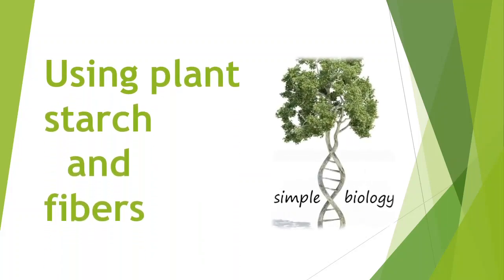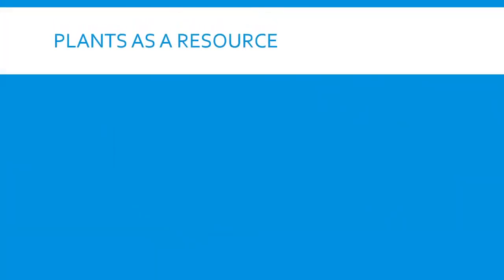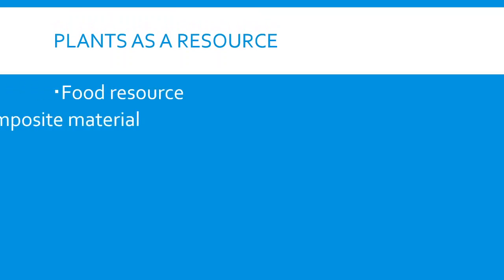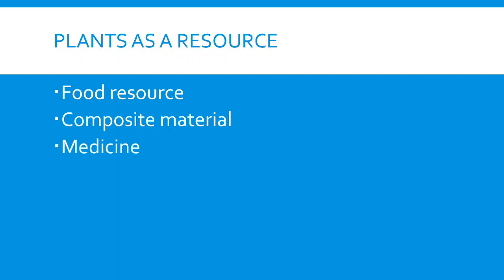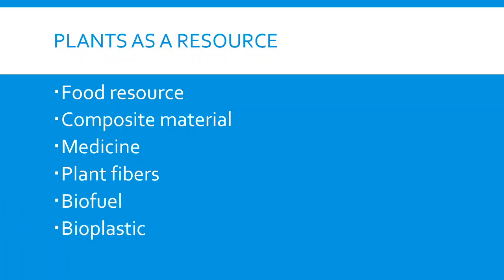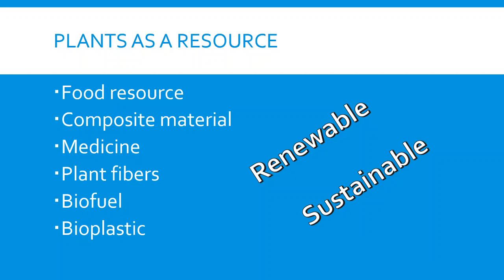Using plant starch and fibers — this is simple biology. Plants were used as a resource for a long time. They were used as a food resource, as a composite material, in medicine, as plant fibers, as a biofuel, and as bioplastics. They are so special because they are renewable — you can grow plants over and over every year and they will not run out, so they are sustainable.